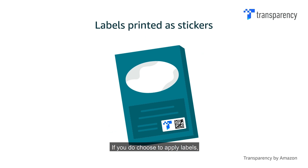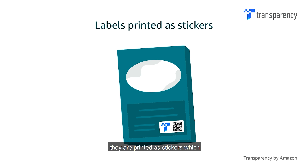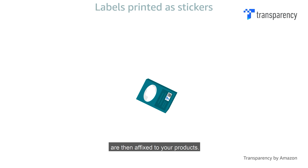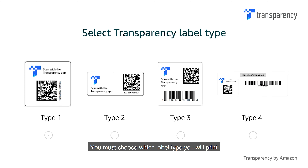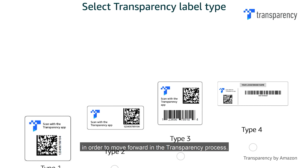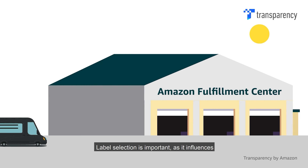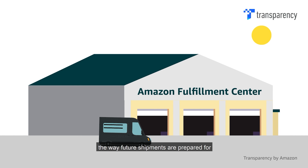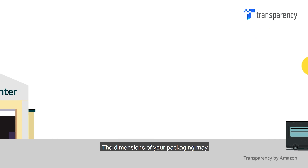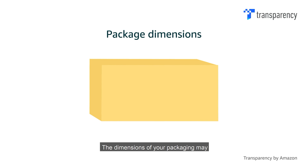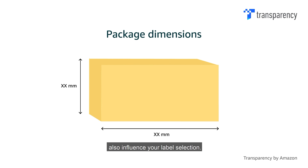If you do choose to apply labels, they are printed as stickers, which are then affixed to your products. You must choose which label type you will print in order to move forward in the Transparency process. Label selection is important, as it influences the way future shipments are prepared for Amazon Fulfillment Centres or other channels. The dimensions of your packaging may also influence your label selection.